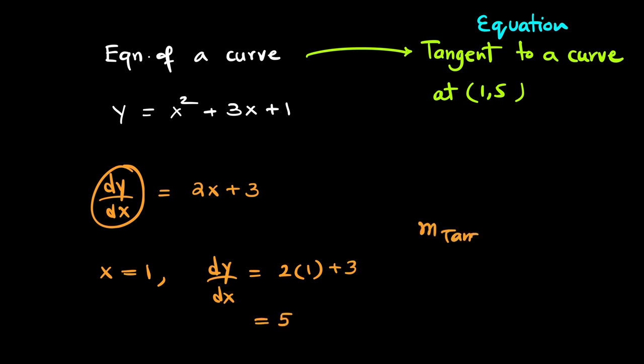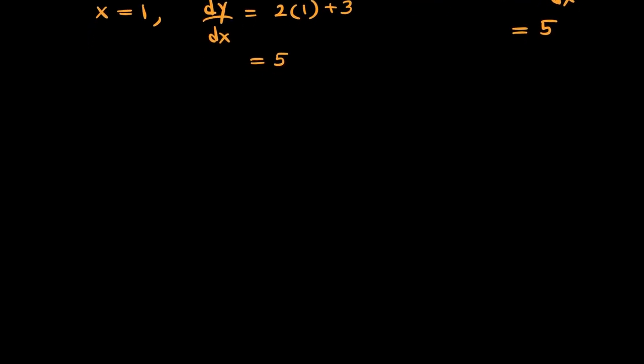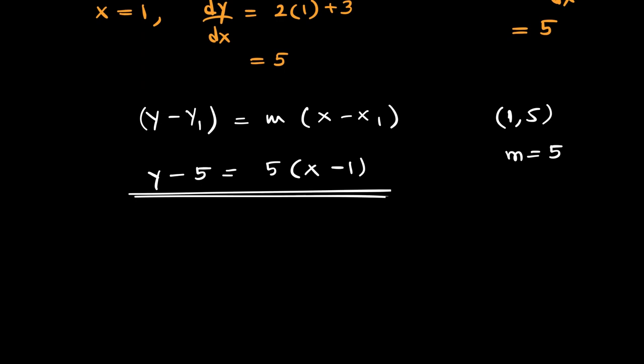In other words, gradient of tangent is the same thing as the value of the gradient function at a particular point, which in this case is 5. And then we can find the equation y minus y1 equals m(x minus x1). (1,5) is the coordinate. Gradient is 5. Therefore, the equation is y minus 5 equals 5(x minus 1). This is the equation of the tangent.